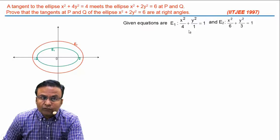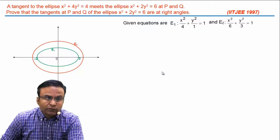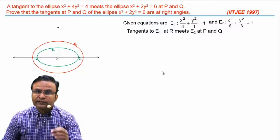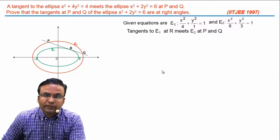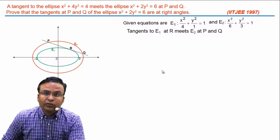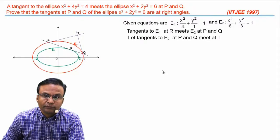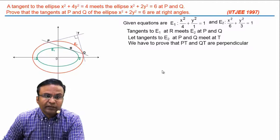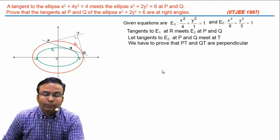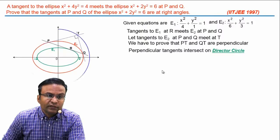According to the question, we draw a tangent to ellipse E1 at point R, which meets ellipse E2 at points P and Q. Now we draw tangents to ellipse E2 at P and Q — these tangents intersect at point T. We have to prove that these tangents are perpendicular, i.e., PT and QT are perpendicular. Since perpendicular tangents of an ellipse intersect on the director circle, point T will lie on the director circle of ellipse E2.